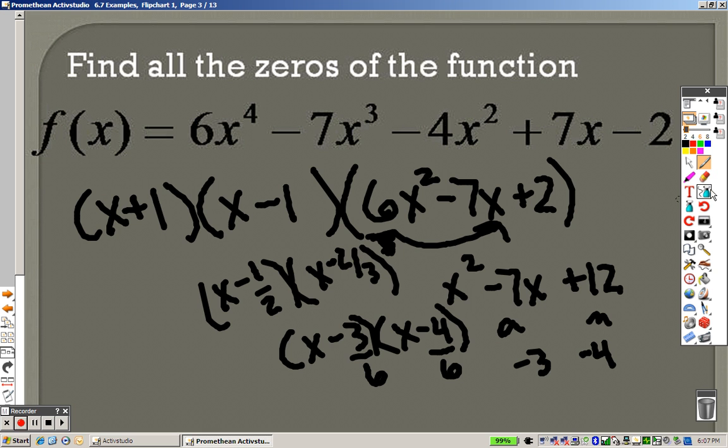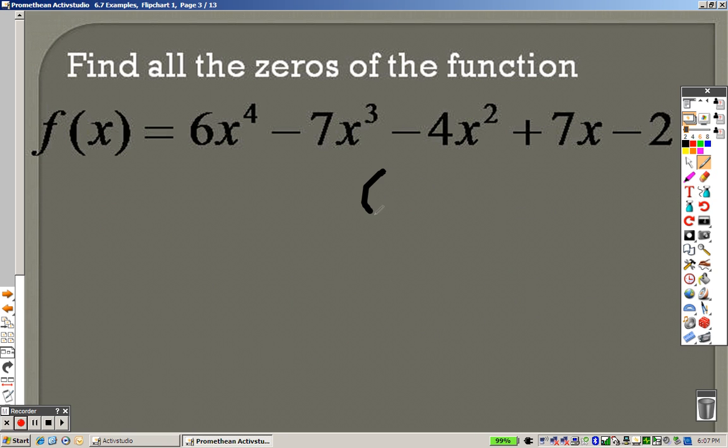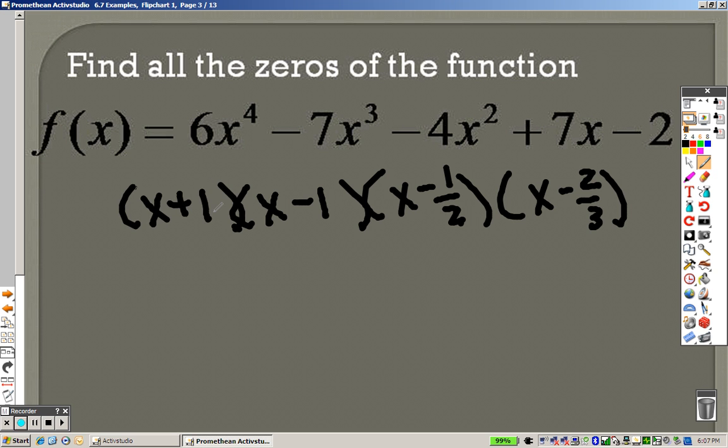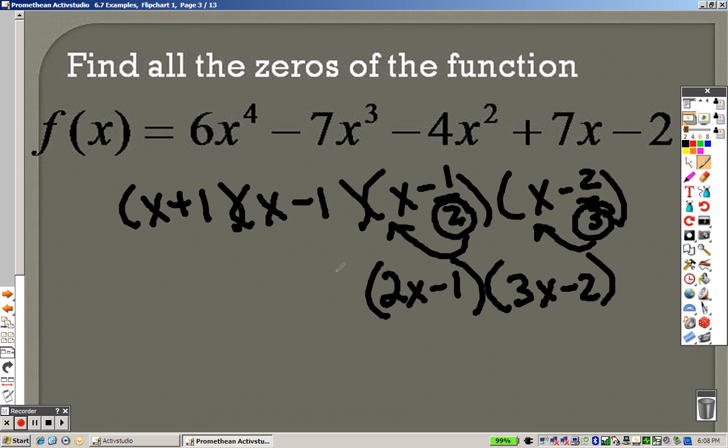So let's see what we have now. Minus 1 half and minus 2 thirds. And remember, I had the x minus 1 and I had the x plus 1. I told you in the last examples that whenever you have a fraction and it's simplified, just move it out in front. So really, that's like saying 2x minus 1. And right here, we have another fraction. So that's like saying 3x minus 2. And I still have my x minus 1, and I still have my x plus 1. And there are all my factors.